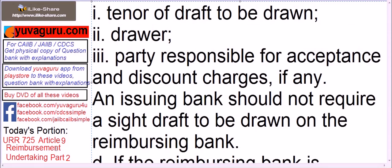These terms are similar to that of the RA Article 6. The required items are: tenor of the draft to be drawn, the drawer, and the party responsible for acceptance and discount charges, if any.